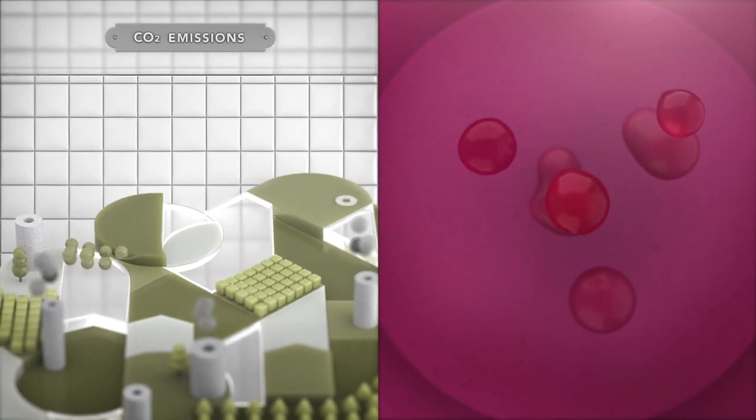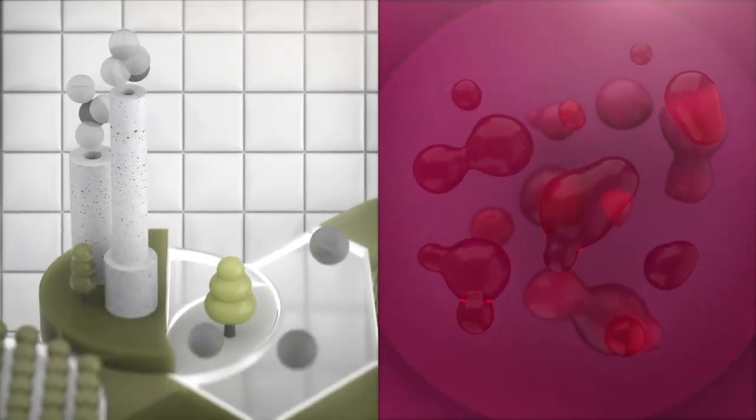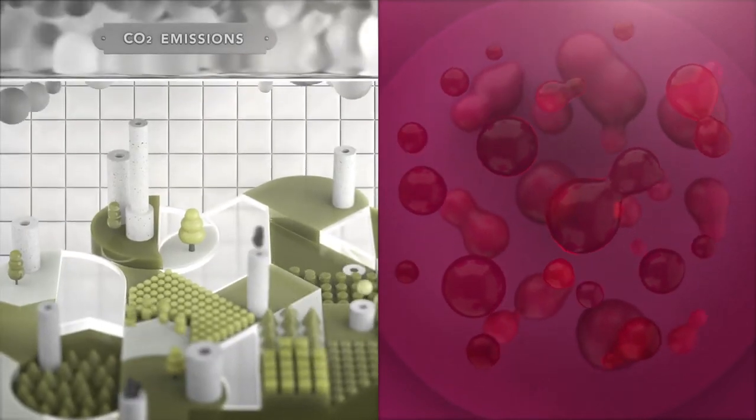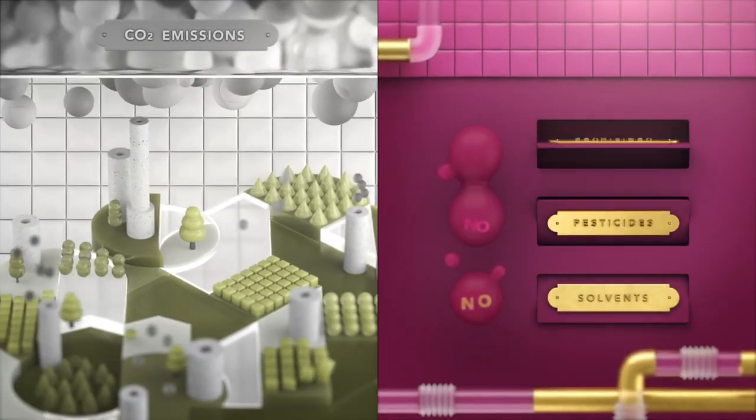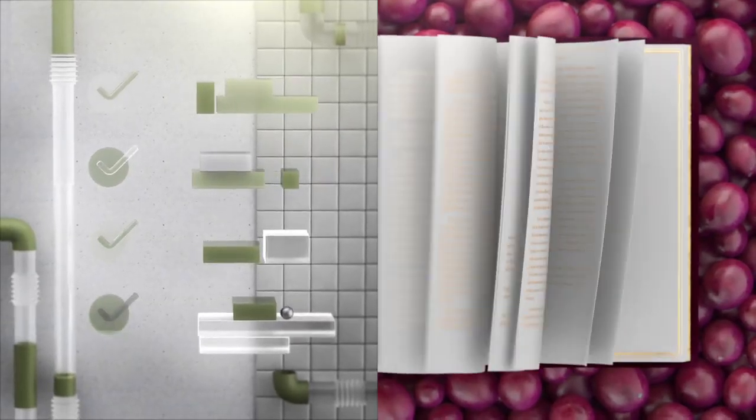Our sustainable technology has unparalleled advantages for the environment. Instead of farming and producing Japanese knotweed, we grow grape cells, eliminating the need for fertilizer, pesticides, and solvents. Vinia is backed by science.